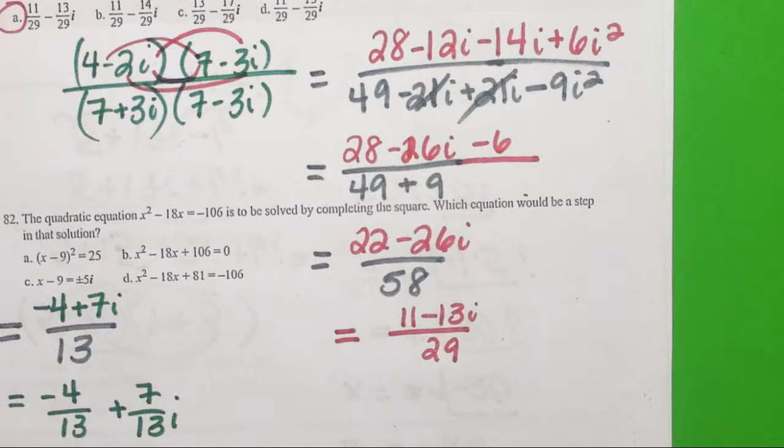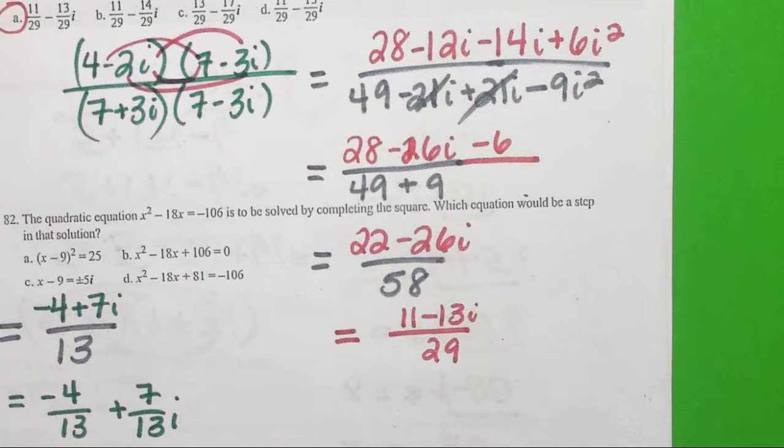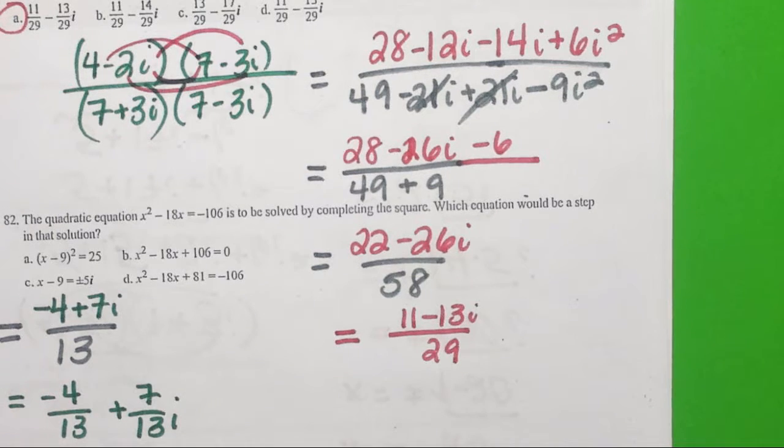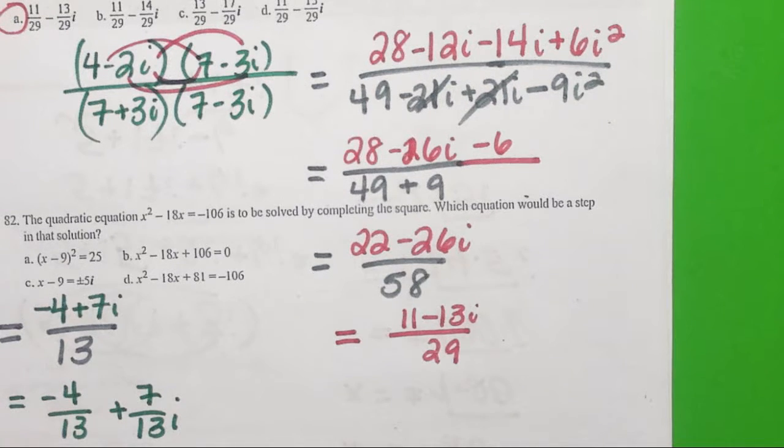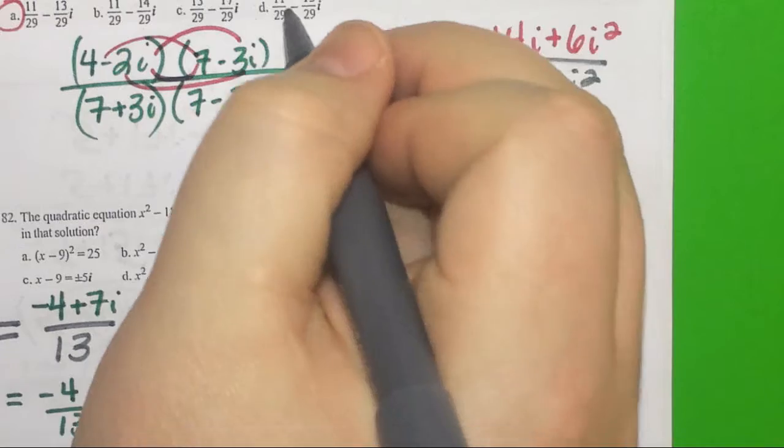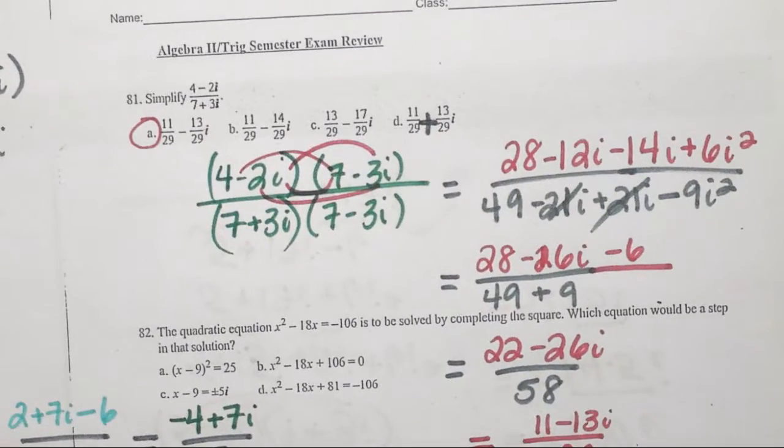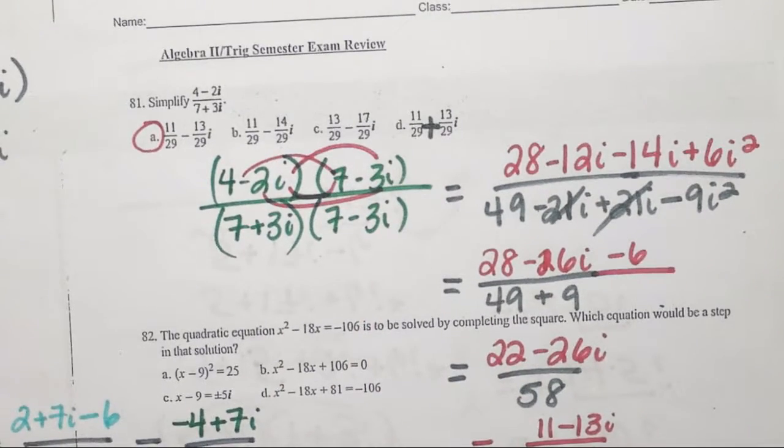What is everybody divisible by? Everything's divisible by 2. So that's how I got 11 minus 13i over 29. Hence why the answer choice is A. Notice A and D are exactly the same. I was supposed to tell you to add a plus sign on D. A and D were exactly the same.